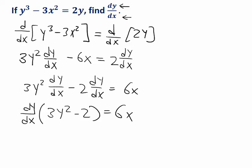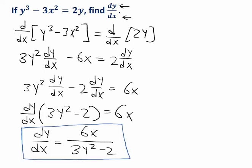And now we can finally isolate dy dx. It's going to be 6x over 3y squared minus two. This is the formula for the derivative of y with respect to x that implicit differentiation gives to us.